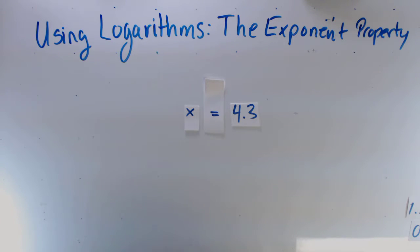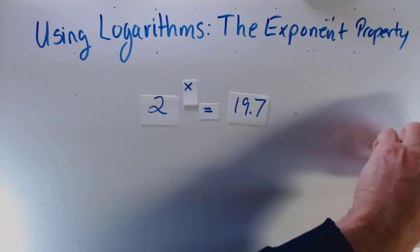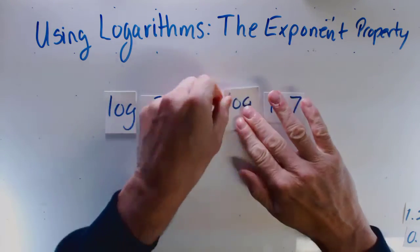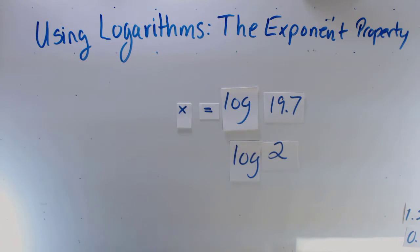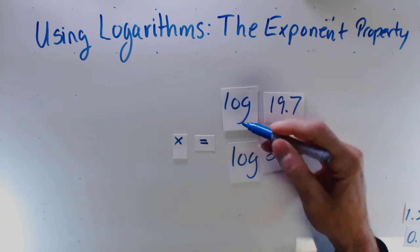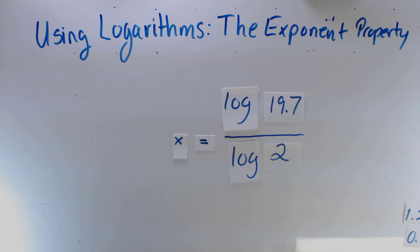We could also just divide both sides before evaluating the logs, and it might save a few keystrokes on your calculator. That's how we can use the exponent property to solve for an exponent using logarithms.